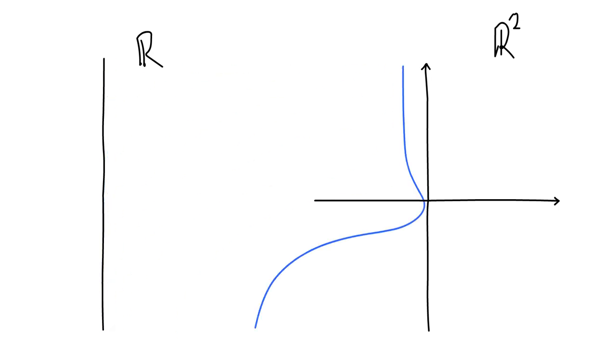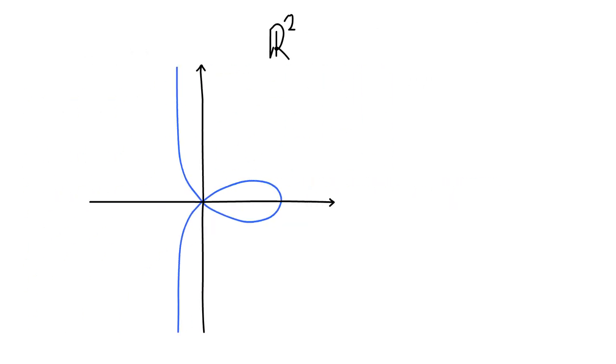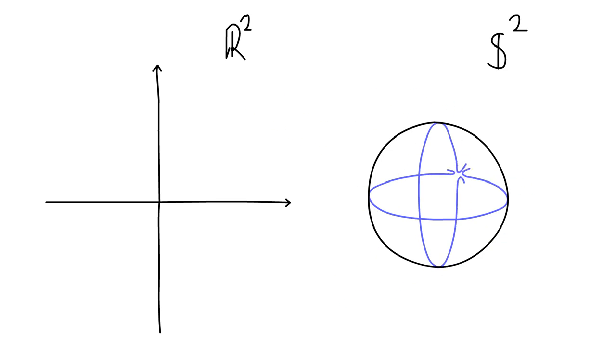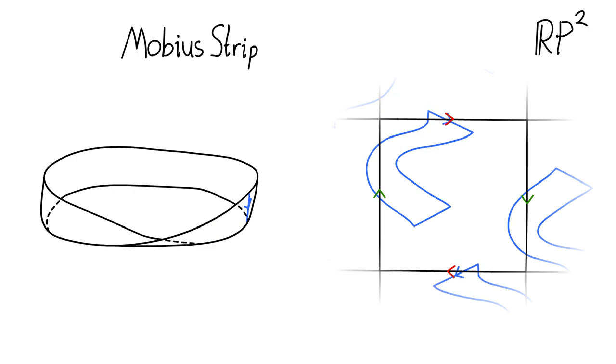For instance, we can talk about whether or not a function from a line to a plane is continuous, or whether a function from a plane to a sphere is continuous, or really any function between any two things that are in some sense spatial. In fact, having a notion of continuity is arguably what it means, or at least part of what it means, for something to be a space.